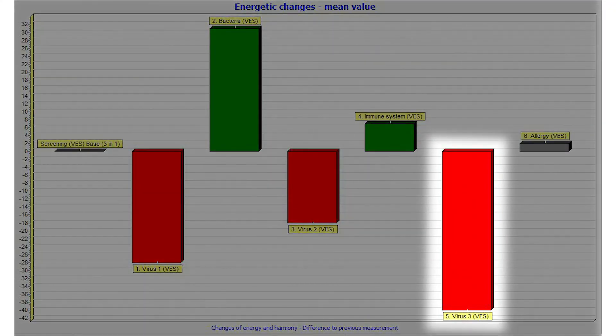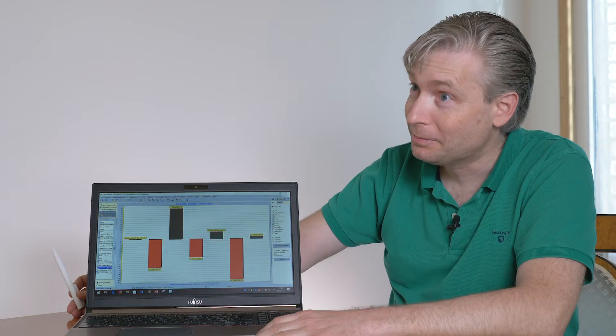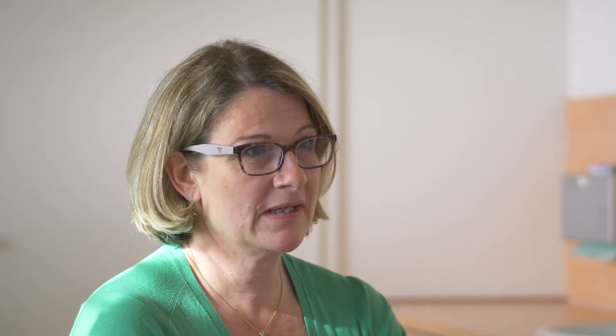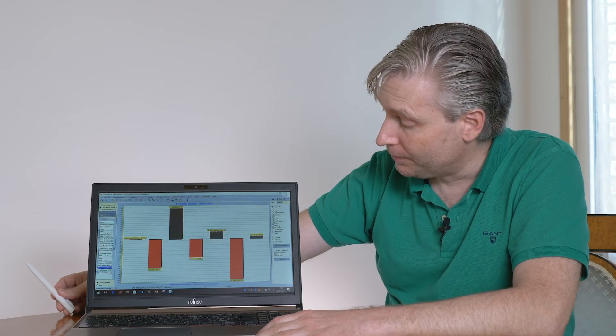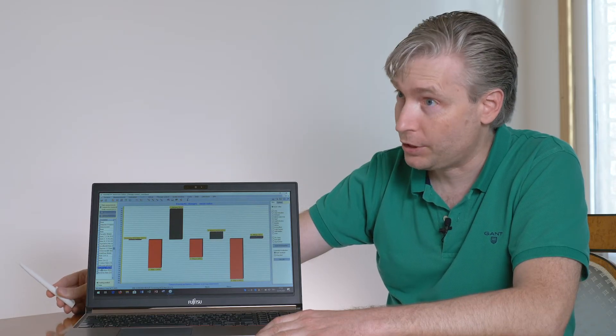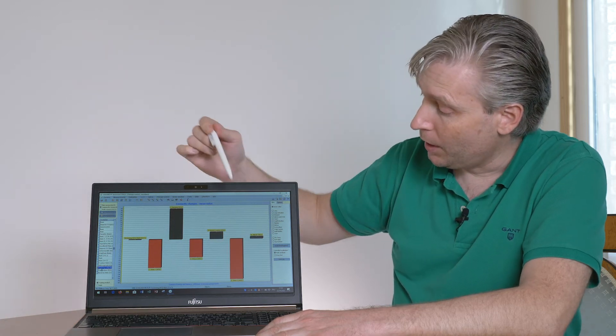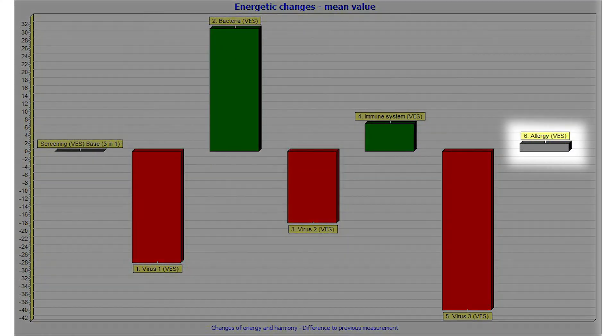This bar represents COVID-19. And you're really lucky. You are. It is deeply red and below the baseline. Which means negative. Obviously no infection with SARS-CoV-2. Last but not least, there are no problems with any allergic reactions.